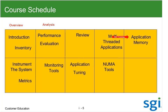Wednesday is single CPU, Thursday is multi-CPU, and Friday is kind of a wrap-up or summary. That's the basic layout for the week.